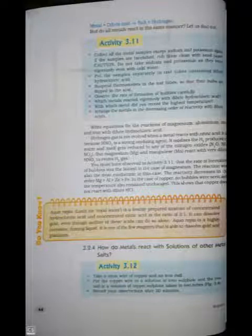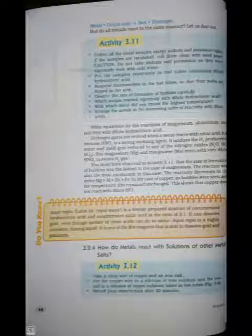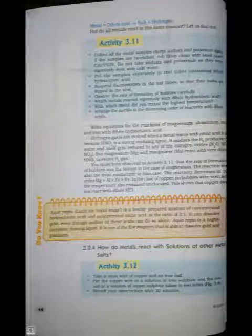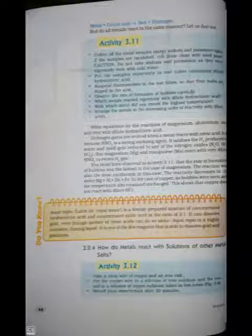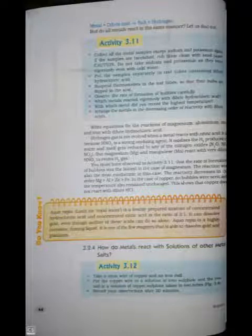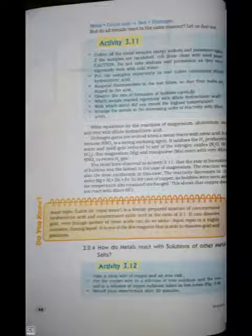Observe the rate of formation of bubbles carefully. Which metal reacted vigorously with dilute hydrochloric acid? With which metal did you record the highest temperature? Arrange the metals in decreasing order of reactivity with dilute acids. Write equations for the reaction of magnesium, aluminium, zinc, and iron with dilute hydrochloric acid. Hydrogen gas is not evolved when a metal reacts with nitric acid. It is because HNO3 is a strong oxidizing agent. It oxidizes the H2 produced to water and itself gets reduced to nitrogen oxides like NO2.